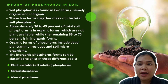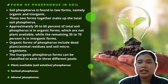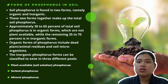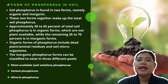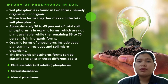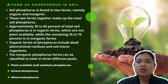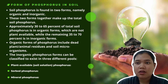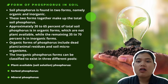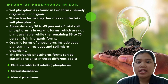The soil phosphorus is found in two forms: organic and inorganic. These two forms together make up the total soil phosphorus. Although total soil phosphorus is generally high, with concentrations ranging from 200 to 6,000 pounds per acre, 80% of this phosphorus is immobile and not available for plant uptake. Approximately 30% to 65% of total soil phosphorus is in organic form, which is not directly available for plants, while the remaining 35% to 70% is in inorganic form.